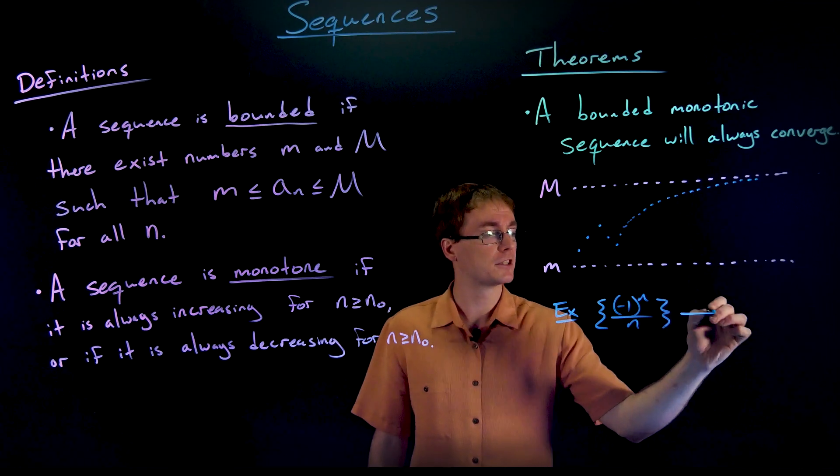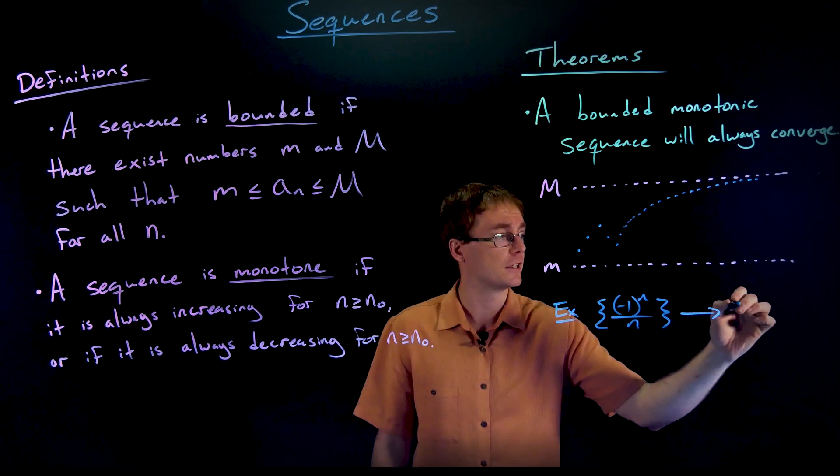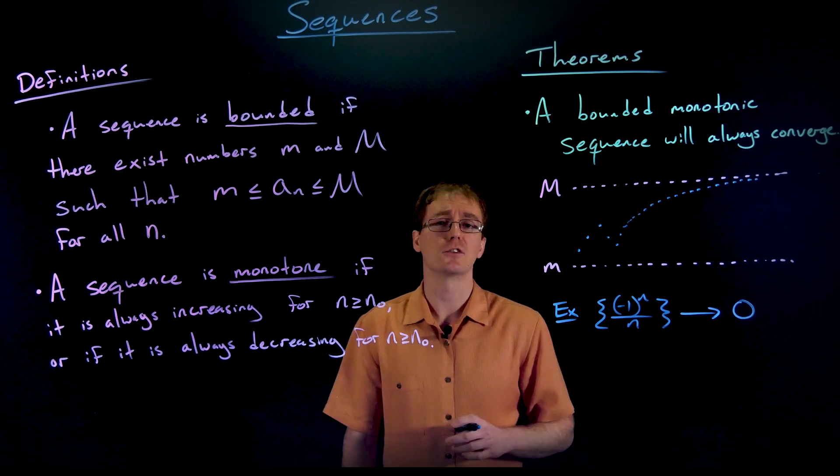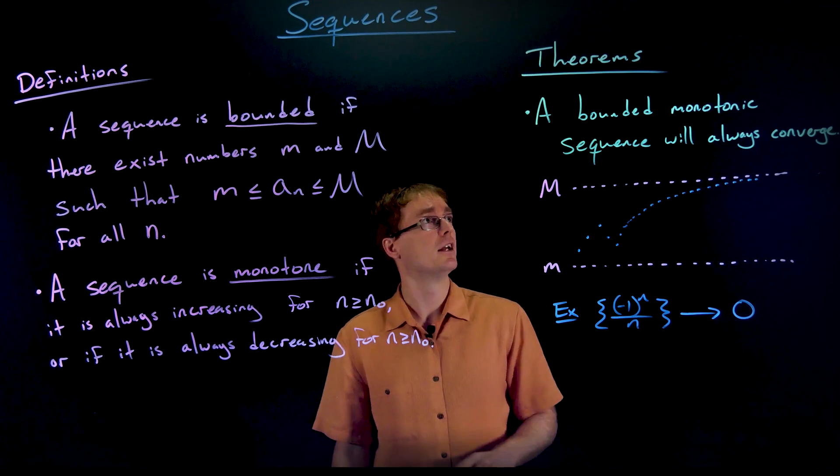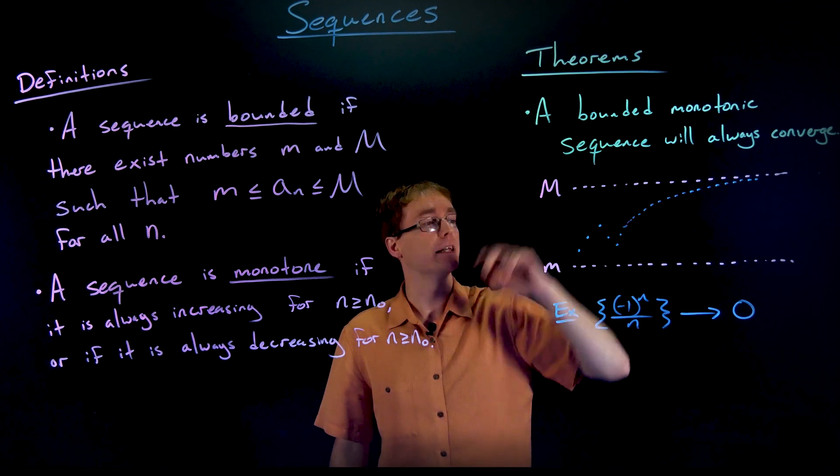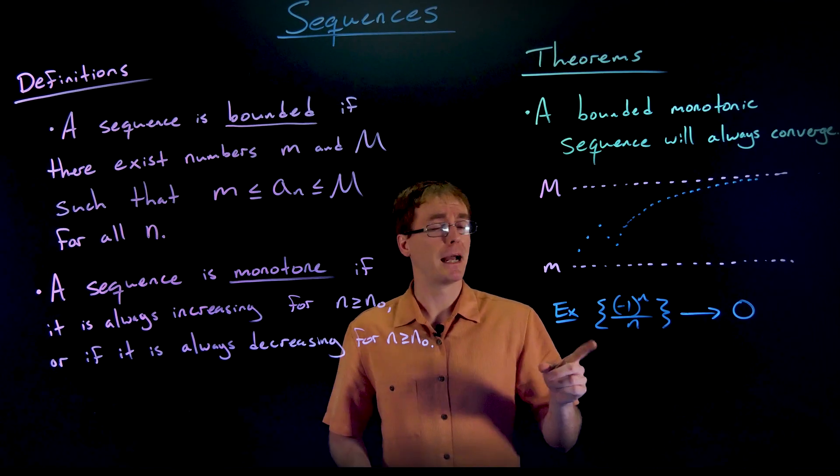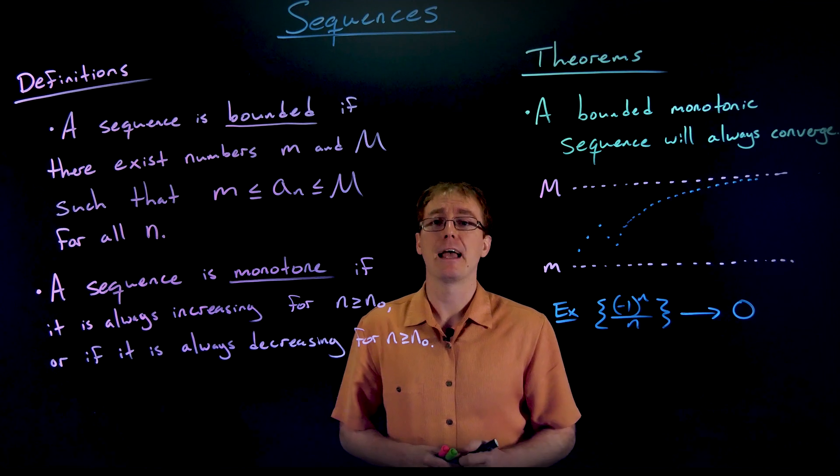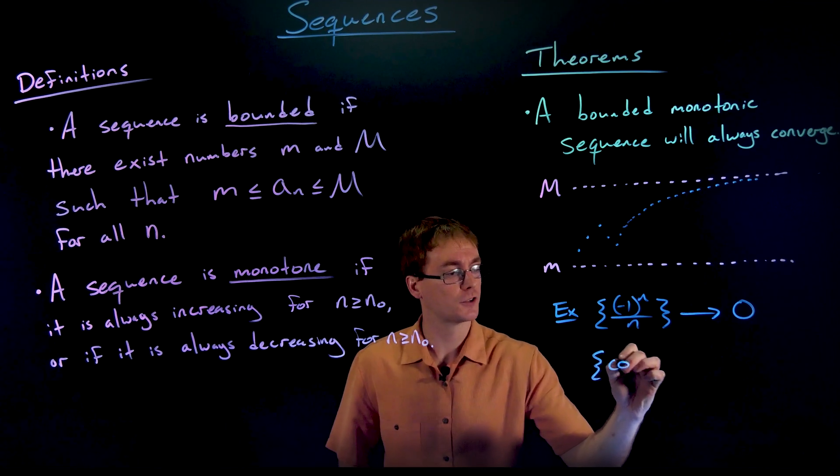But we do know about the terms in the sequence is that they are going to go eventually to zero. We saw that using the squeeze theorem. So here is an example of a sequence that is not monotonic, but it is bounded and it converges. But there are other examples of sequences that are bounded but not monotonic and do not converge or diverge.